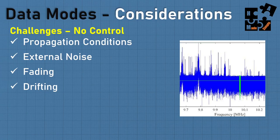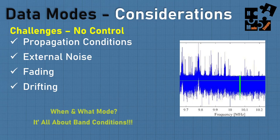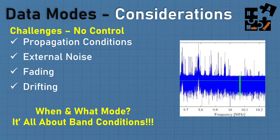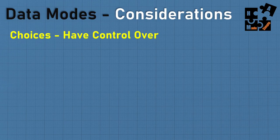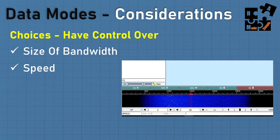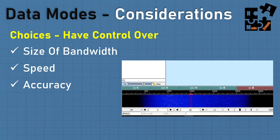So when and what mode? It's all about band conditions. Another principle is you do have choices — things you have control over. You can control the size of the bandwidth and choose what speed is acceptable. Are you okay with speed versus accuracy? Are you willing to go faster with less accuracy, or do you want total accuracy at a slower speed? And how much power output do you want? From a prepper standpoint, the ideal is low power, accurate, and acceptable speed — determined largely by bandwidth and propagation conditions.